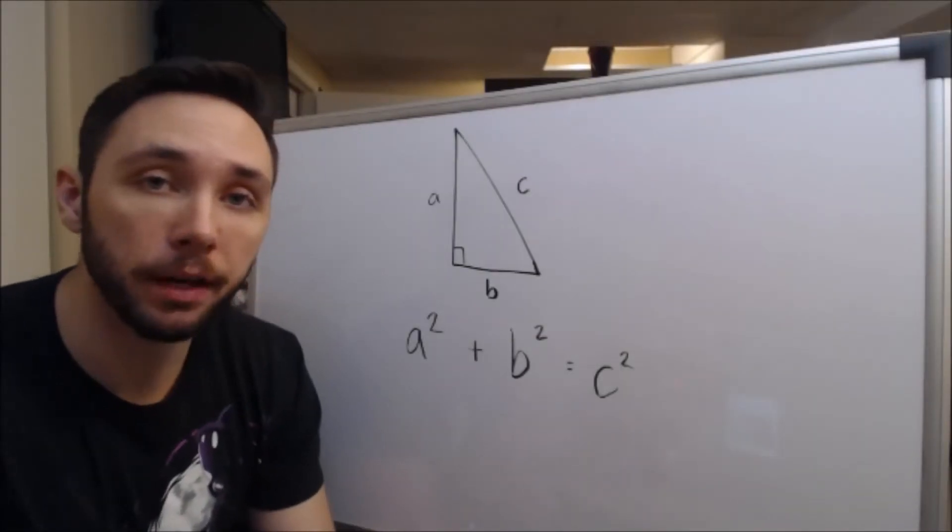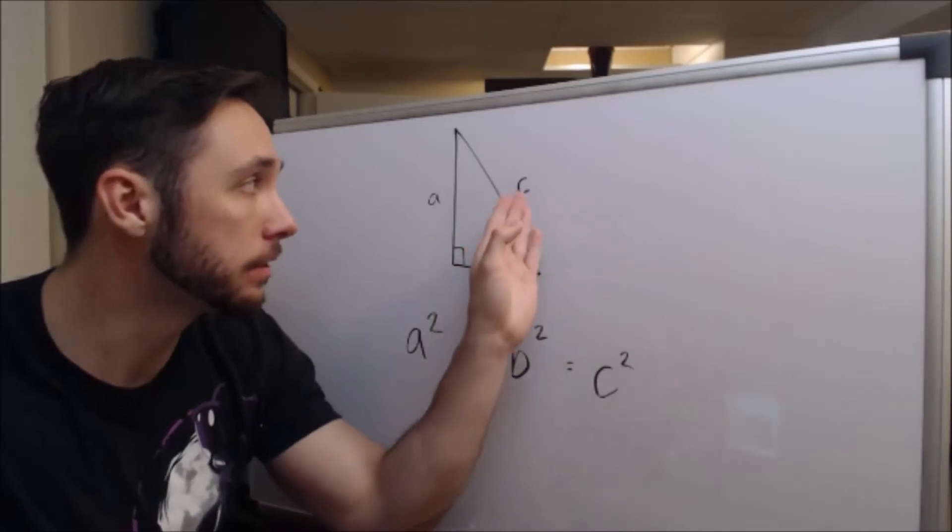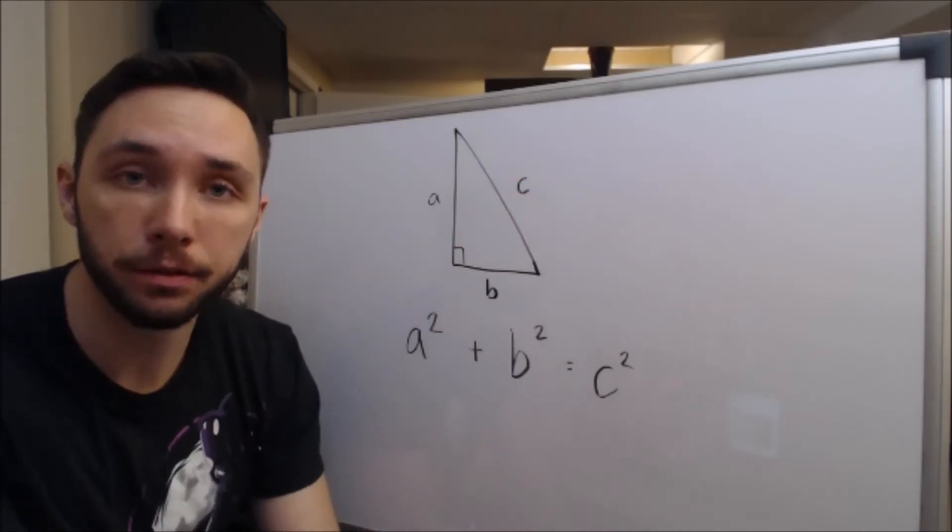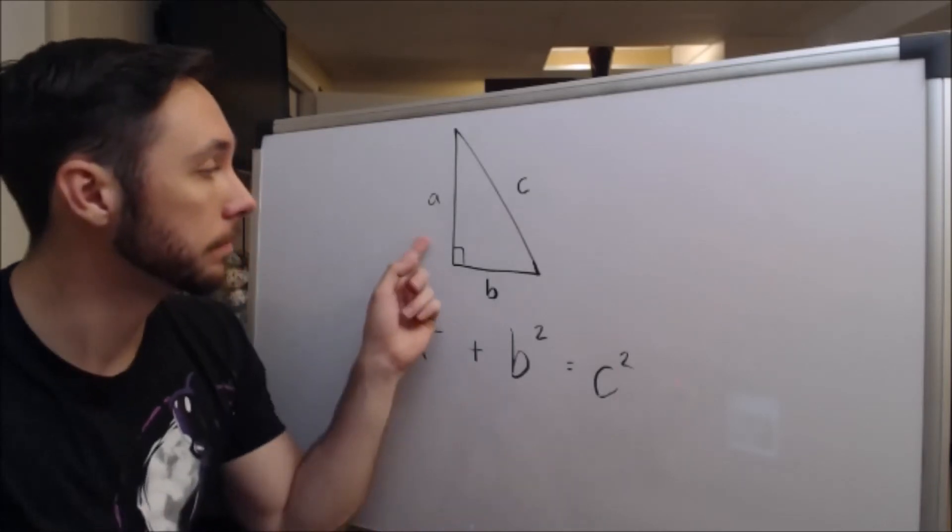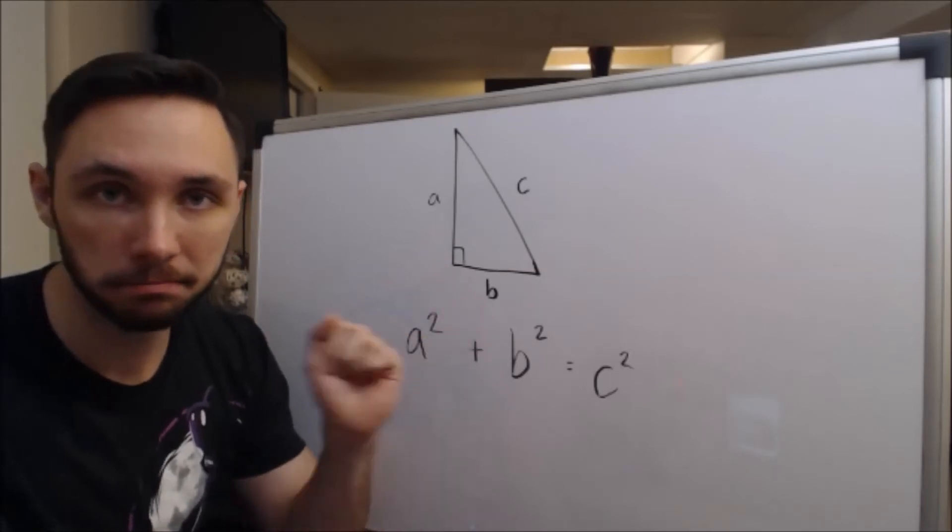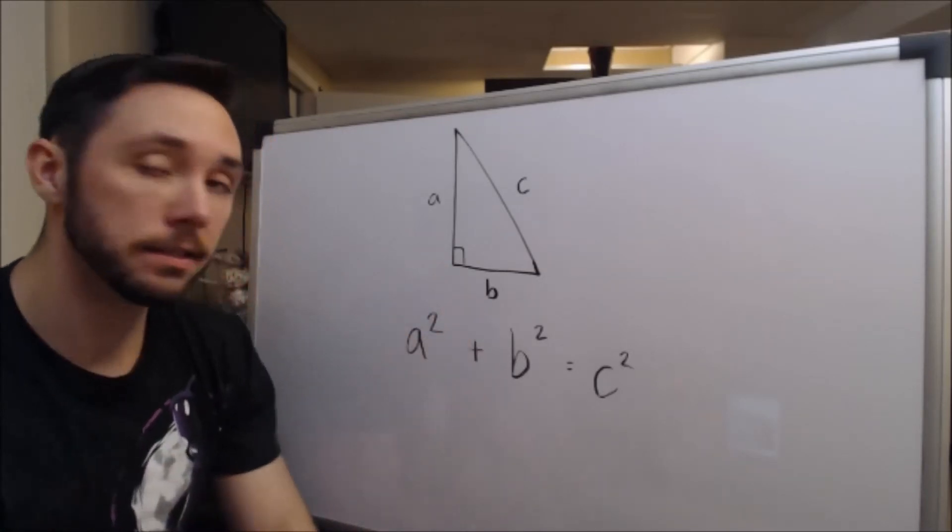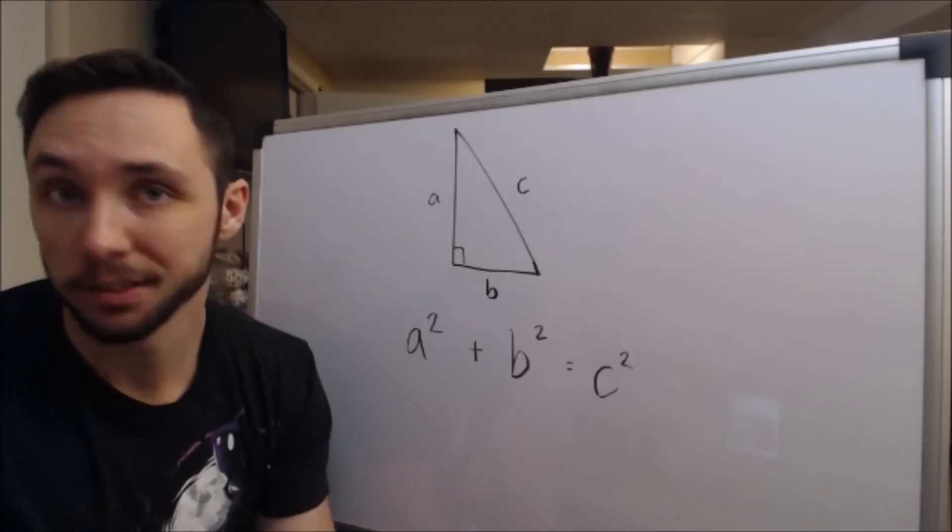The Pythagorean theorem simply and so elegantly states that the square of the hypotenuse of a right triangle is equal to the sum of the squares of the two other sides. Otherwise known as a squared plus b squared is equal to c squared. Let's jump right into it.